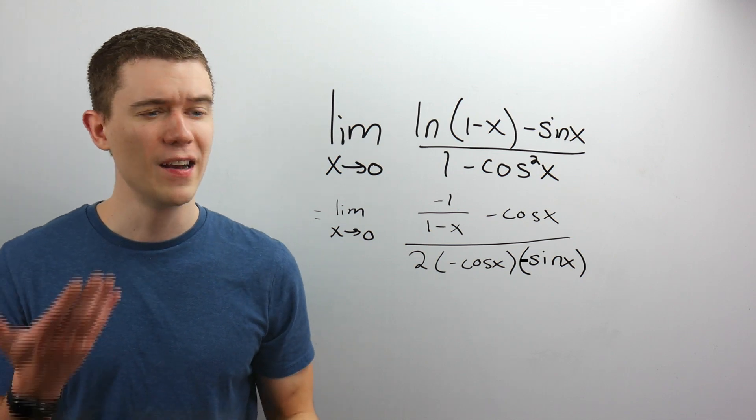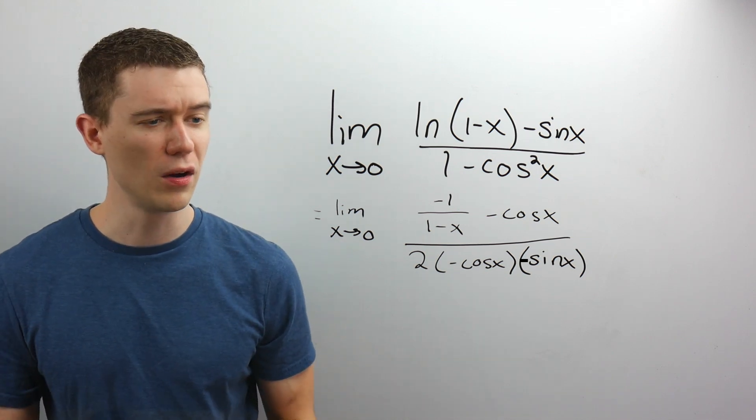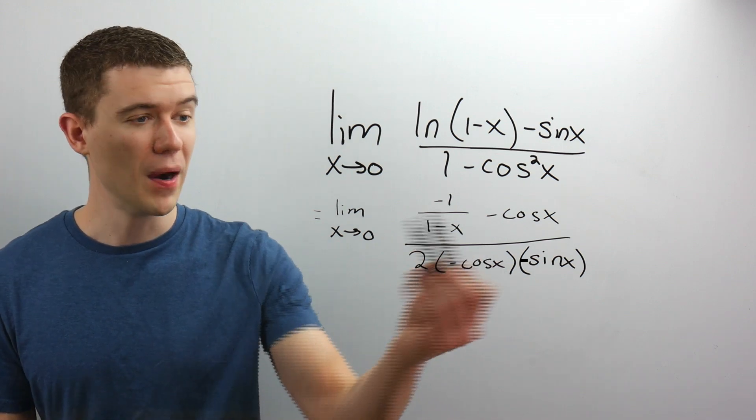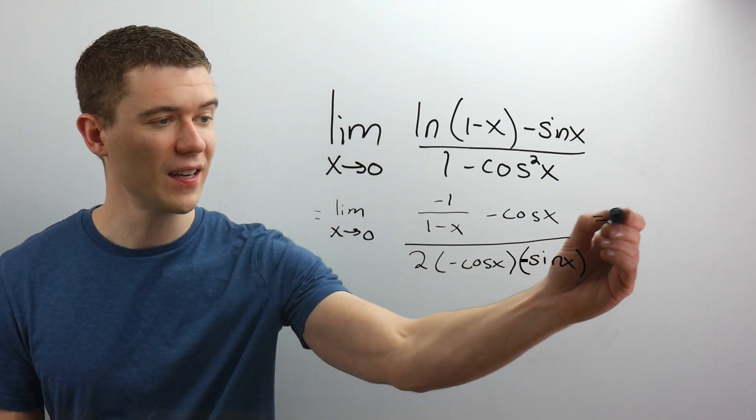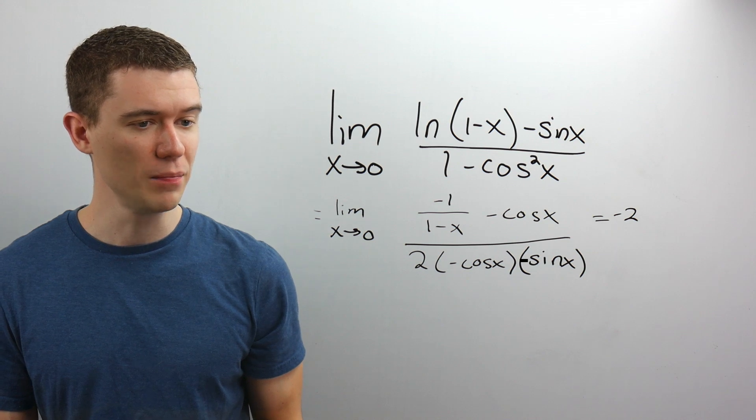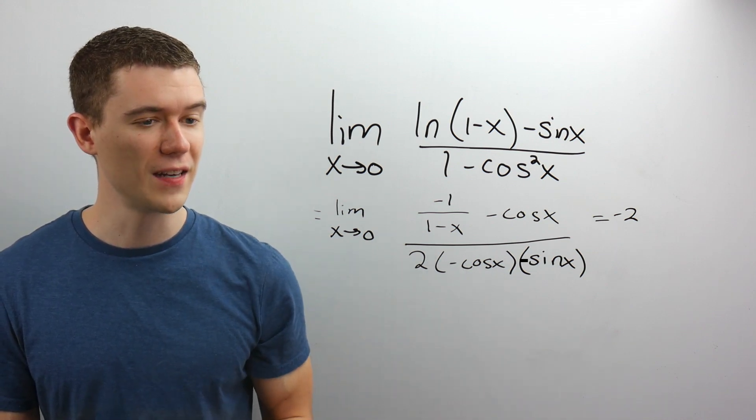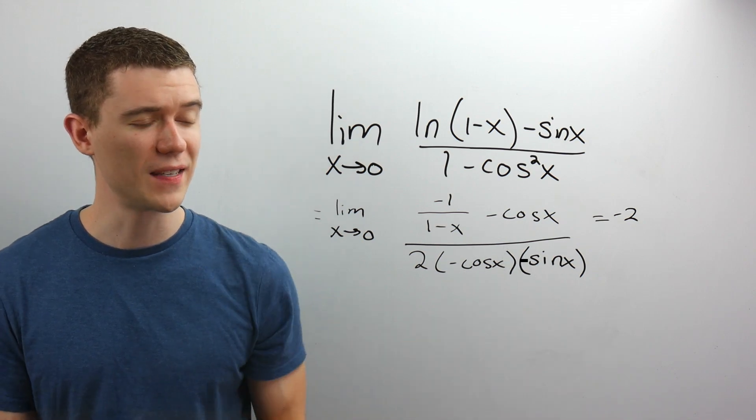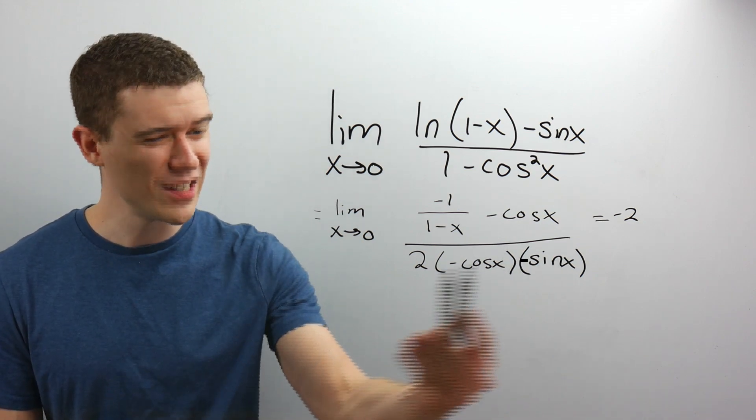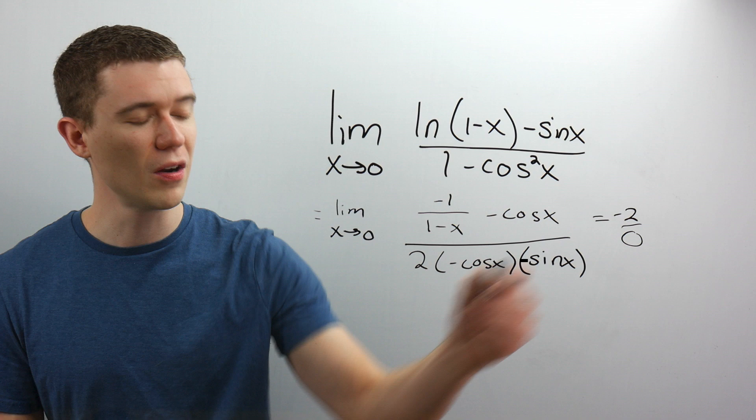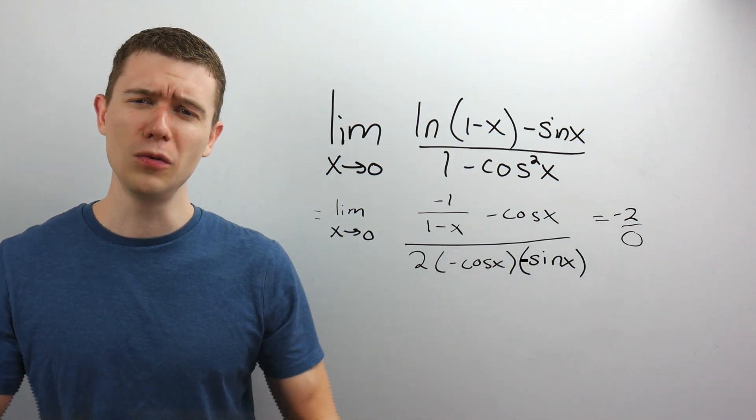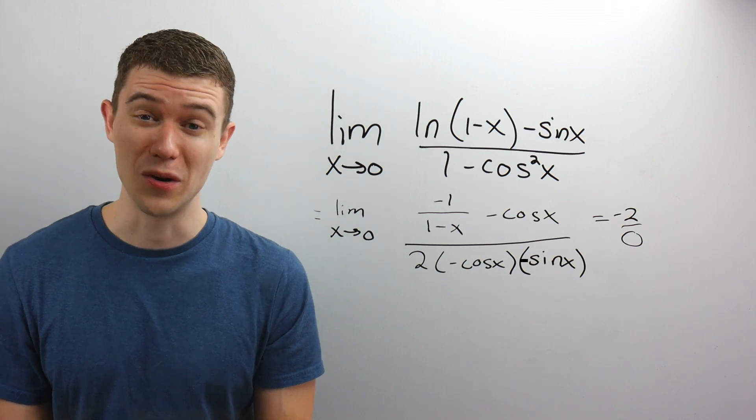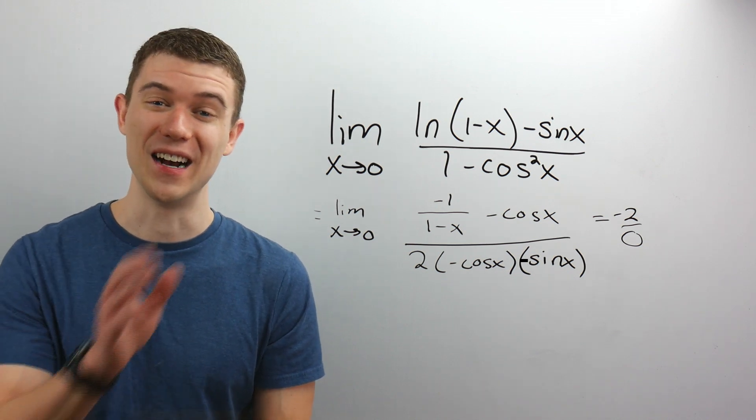Plug in x equals 0. Well, I'd put a 0 here. So I'd really just have minus 1 minus cosine of 0. That's going to give us negative 2 on the top. And if I plug in 0 in the denominator, well, 2 cosine of 0 is 1 times sine of 0 is 0. And 0 times anything is 0. It looks like we're rounding up with a negative 2 in the numerator, a 0 in the denominator. And you know what? You're welcome to go ahead and say that that limit does not exist.